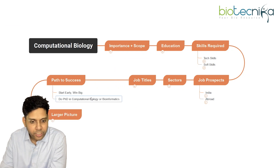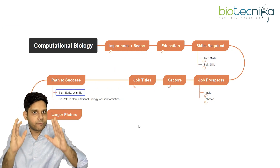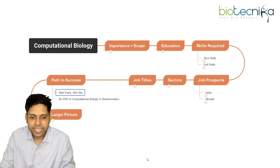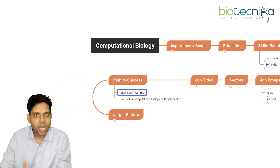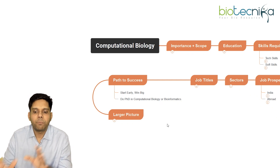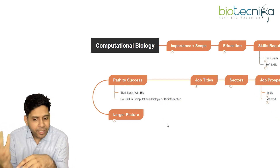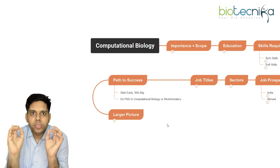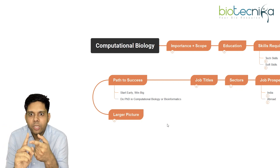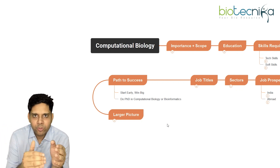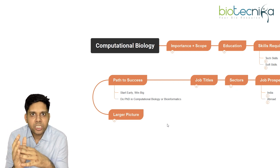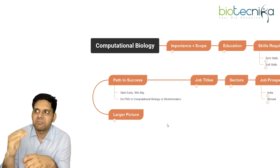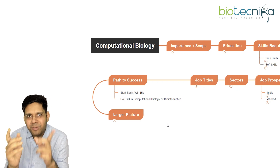Start early, win big. Whether you are in bachelor's or master's, wherever you're standing, start learning these skill sets. Do a PhD in computational biology, bioinformatics, or analytics — that will help you completely. By the time you have cleared your CSIR exam or enrolled into a PhD, you will be thorough with all those tools and just need to apply and implement. You could be at the forefront of this cutting-edge technology.